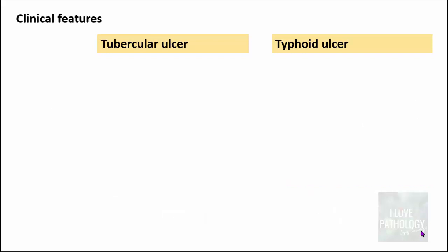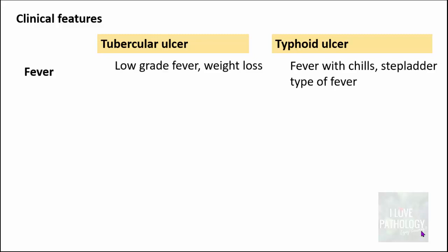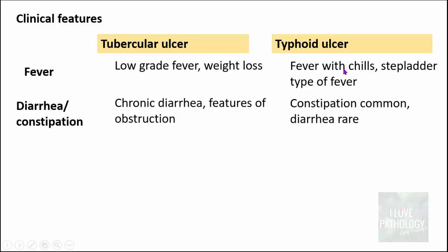Moving on to the clinical features of tubercular and typhoid ulcers: in tuberculosis, the fever is usually low-grade and is often accompanied by weight loss. Whereas in typhoid, the fever is classically a step-ladder type of fever, and patients will have chills along with fever. Regarding diarrhea or constipation, chronic diarrhea is a feature of tubercular ulcers and sometimes there are features of obstruction. In typhoid ulcers, diarrhea is rare, whereas constipation is more common than diarrhea.